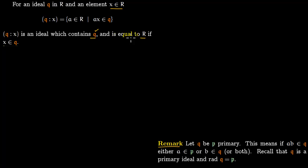This is also important: Q/x contains Q at the very least, and it becomes the entire ring R if you pick X lying in the ideal Q, again by the property of the ideal.